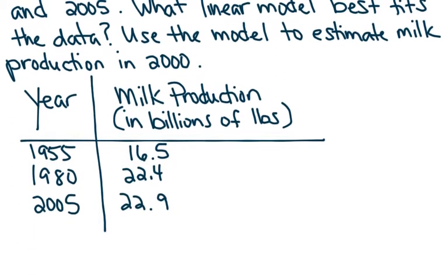So now that I scroll down a little here, in 1955 there were 16.5 billion pounds of milk produced. In 1980, it was 22.4 billion pounds. And in 2005, it was 22.9 billion pounds.